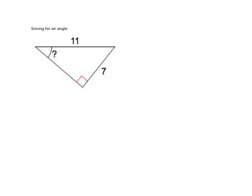Here we're solving for an angle. I'm going to identify the angle I'm looking for and then label my triangle based on that. We've got the opposite that we know and the hypotenuse that we know, so this is a really good candidate for sine. So we've got sine of the unknown angle is equal to 7 over 11.